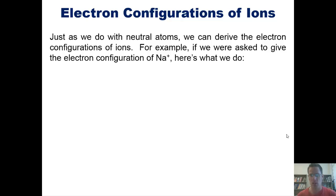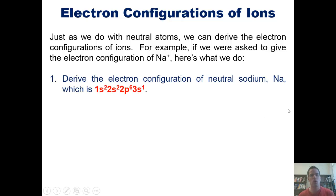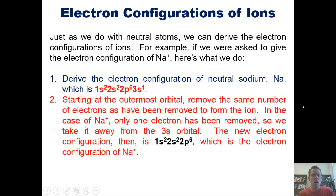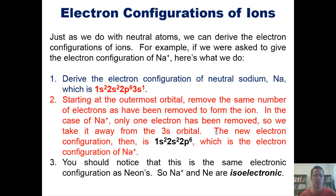I'll now teach you about the electron configurations of ions. Just as we can do with neutral atoms, we can derive the electron configurations of ions. For example, if we were asked to give the electron configuration of sodium cation, here's what we do. First, we derive the electron configuration of neutral sodium, which happens to be this thing right here. Second, starting with the outermost orbital, we remove the same number of electrons as have been removed to form the ion. In the case of sodium plus, only one electron has been removed, so we take it away from the 3s orbital, this outermost orbital here. So the new electron configuration is 1s2, 2s2, 2p6, which happens to be the electron configuration of sodium plus. Now, if I had an ion that was a negatively charged ion, I would go in reverse—that is, I would add electrons to the outermost orbitals. You should notice, by the way, that this happens to be the same electron configuration as neon, so sodium plus and neon are isoelectronic.